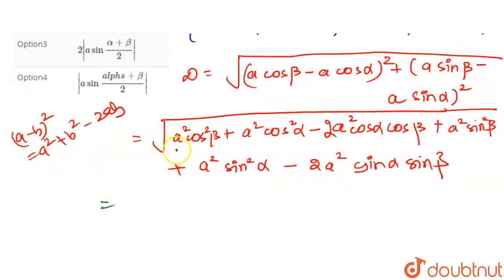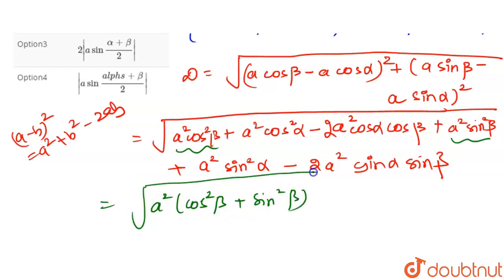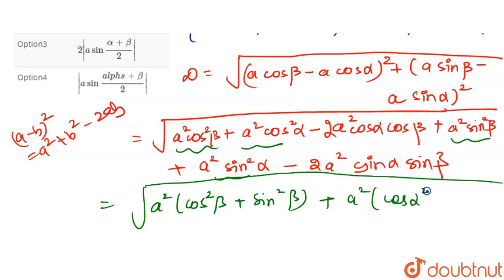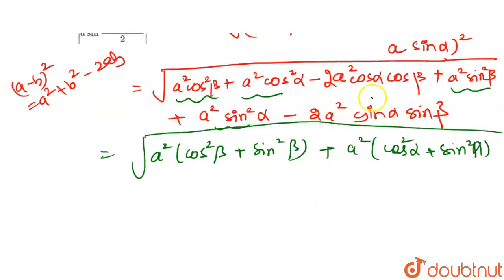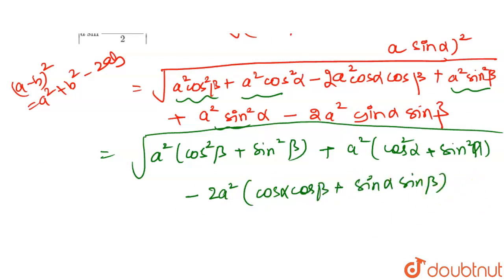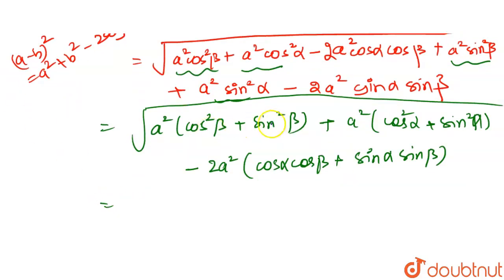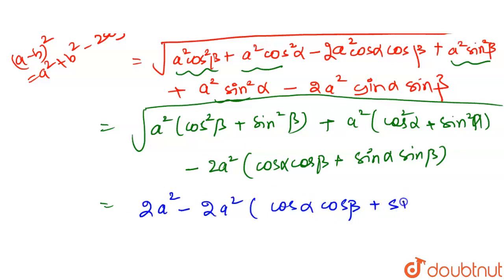Taking a² common from a²·cos²β + a²·sin²β gives cos²β + sin²β, and similarly a²·cos²α + a²·sin²α gives cos²α + sin²α. Since cos²x + sin²x = 1, this simplifies to a² + a² - 2a²(cos α·cos β + sin α·sin β), which equals 2a² - 2a²·cos(α - β), all under the square root.